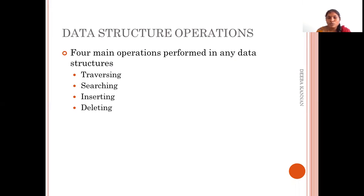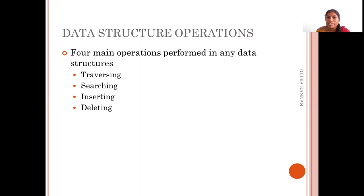Based on the algorithm or the type of data structure, the way in which data are viewed varies. For example, in a linear data structure, we can start from the beginning and visit one by one in sequence. But in a tree or graph data structure, we cannot use that approach. So based on the type of data structure, this operation actually varies.